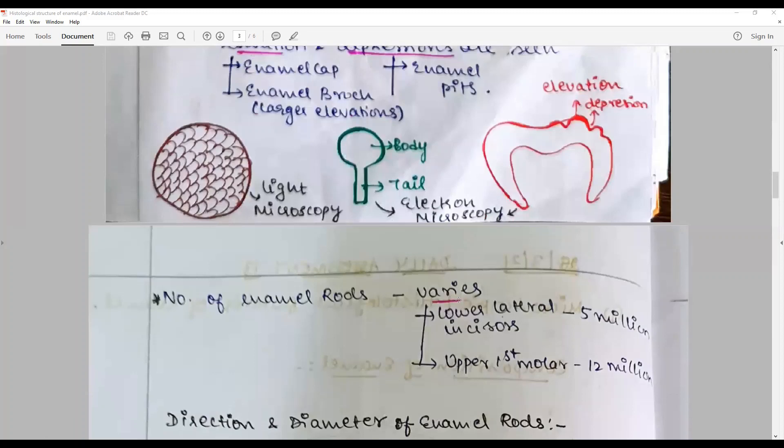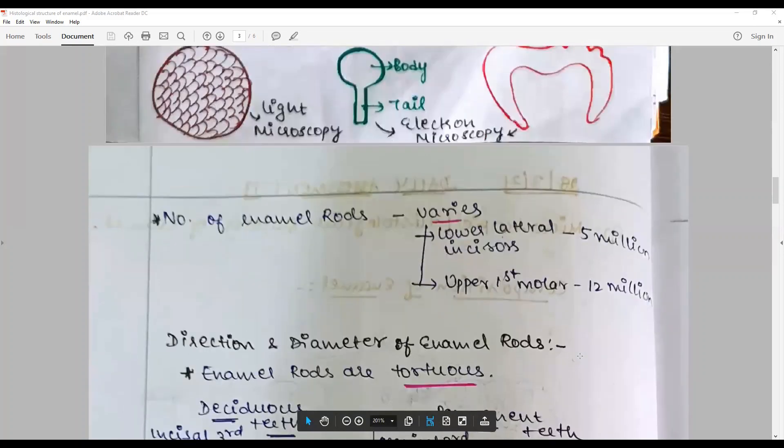Number of enamel rods varies. The lower lateral incisors, it is about knife edge, about 5 million, whereas in the upper first molars, the cuspal tips, you have 12 million per square unit area.